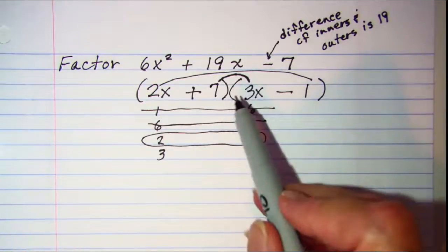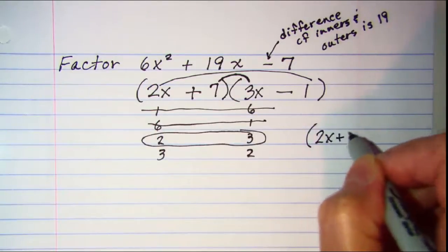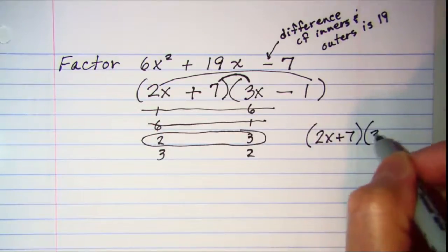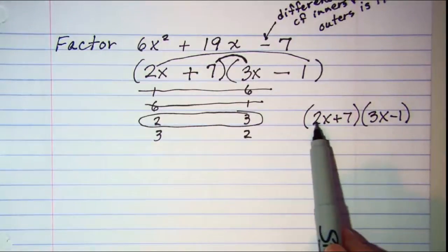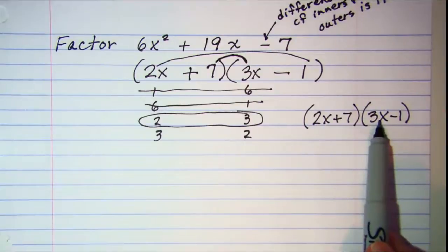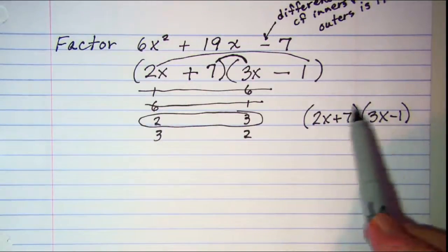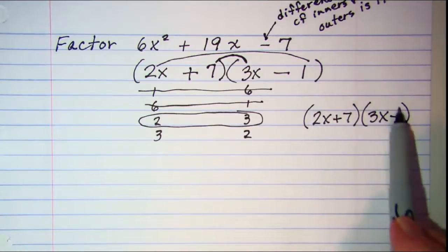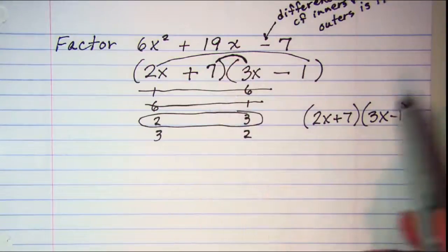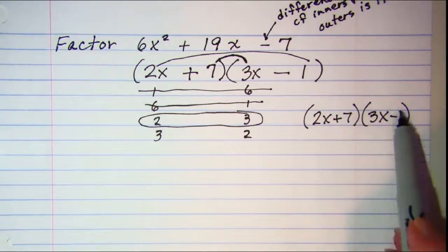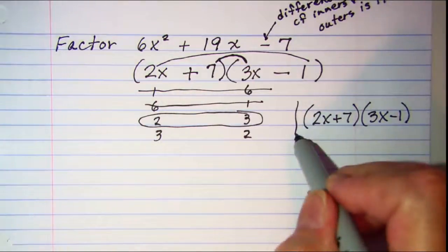So we can check and see. My first two terms is 6x squared is good. My inner product is 21x. My outer product is negative 2x. Add those together and I get 19x. And then my last one, 7 times negative 1 is negative 7. So this is my factored form.